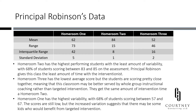Let's start with Homeroom 2. Homeroom 2 is clearly outperforming the other classes. They have the highest average, and the majority of students have scored between 83 and 85 on the assessment. This class should get the least amount of targeted time with the interventionist.